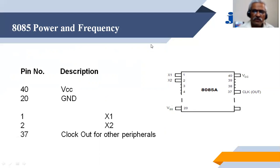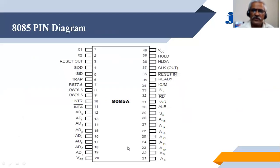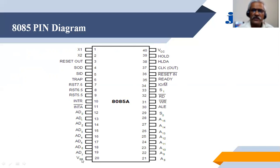From the previous diagram, pin number 40 is assigned to VCC — this is where the plus 5 volt will be connected. The 8085 operates on a single plus 5 volt power supply. Pin number 20 is connected to VSS, that is the ground. So the power requirement is: ground to pin number 20 and VCC plus 5 volt to pin number 40. These are the power signals.